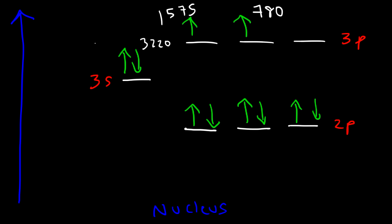Part b: silicon or phosphorus? Phosphorus is to the right of silicon in the periodic table. Since ionization energy increases going right, phosphorus should have the higher value. Indeed, silicon's first ionization energy is 780 and phosphorus's is 1060 kJ/mol — going from 3p² to 3p³, the ionization energy increases towards the right.